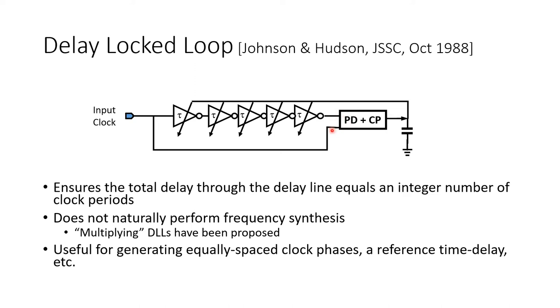That is that there would be zero phase difference between the input clock and this delayed version of the input clock. So if there's zero phase difference between these two versions of the clock, it must mean that through this path, the clock is experiencing an integer number of clock periods of delay.